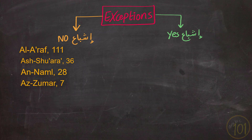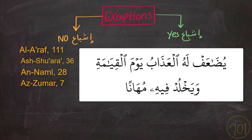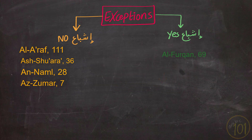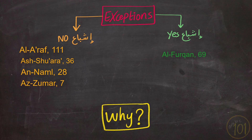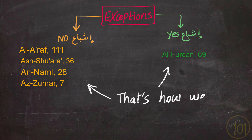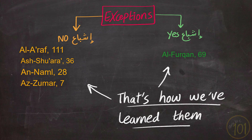And now the final case where you should not have إشباع, yet there is: يُضَاعَفْ لَهُ الْعَذَابُ يَوْمَ الْقِيَامَةِ وَيَخْلُدْ فِيهِ مُهَانًا. Here the ها was added to the end of the word, but before it there is a يَا that has سُكُون on top. This breaks the second rule, and yet we are going to add إشباع. Why didn't these cases follow the rule? The answer is simple: this is how we have learned it from the Prophet, peace and blessings be upon him. This is how he recited them, and that's how we have learned them.